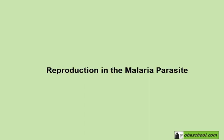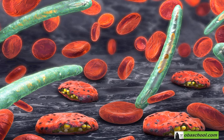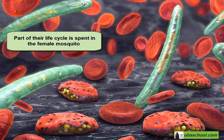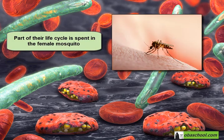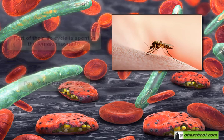Let's look at reproduction in parasites, specifically the malaria parasite. The parasites that cause malaria reproduce differently in different stages of their life cycle. Malarial parasites spend part of their life cycle in the body of a female mosquito, and part of their life cycle in the blood and organs of human beings. Both sexual and asexual reproduction are part of the life cycle of the malaria parasite.